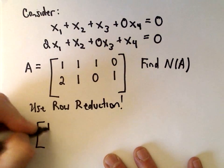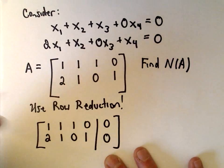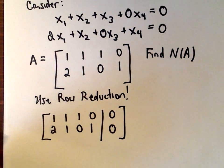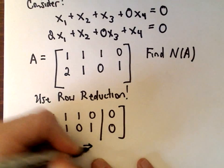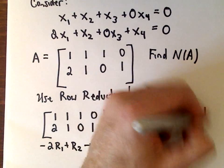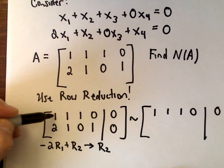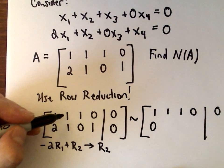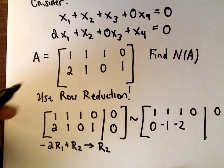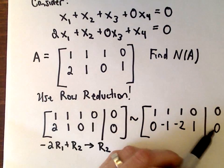So we've got our matrix: [1, 1, 1, 0 | 0] and [2, 1, 0, 1 | 0]. The first row operation is to take negative 2 times row 1 and add it to row 2 to get a new row 2. Leaving row 1 alone, we compute: −2·1 + 2 = 0, −2·1 + 1 = −1, −2·1 + 0 = −2, −2·0 + 1 = 1, and 0 for the augmented column.